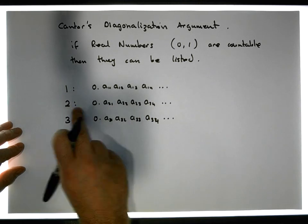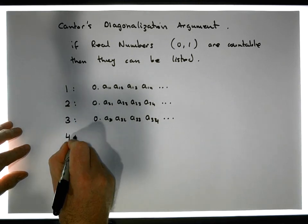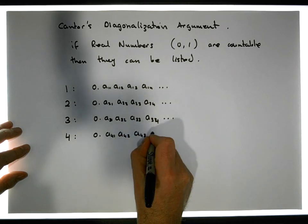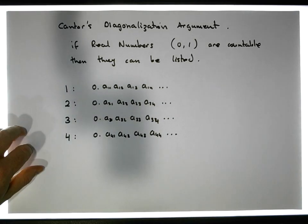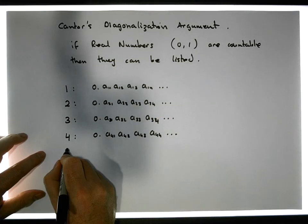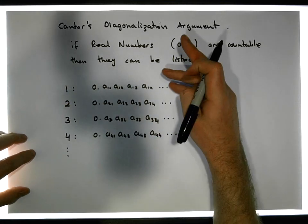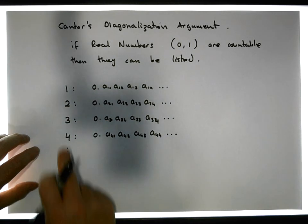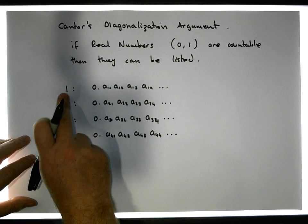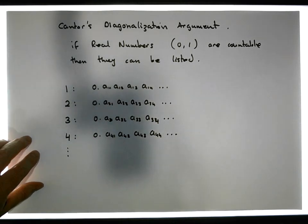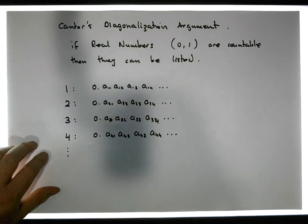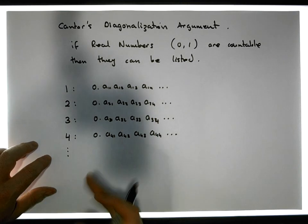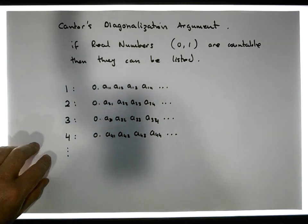So we have a first, second, third, fourth real number — 0.a₄₁ a₄₂ a₄₃ a₄₄ ... — and we continue in this fashion, trying to list the real numbers by associating each one with one of our natural numbers. Since the natural numbers are countable by definition, each natural number is being paired with a single real number. What we're trying to construct is a one-to-one and onto correspondence — a bijection — between the natural numbers and the real numbers.